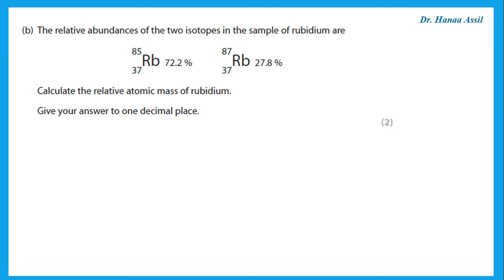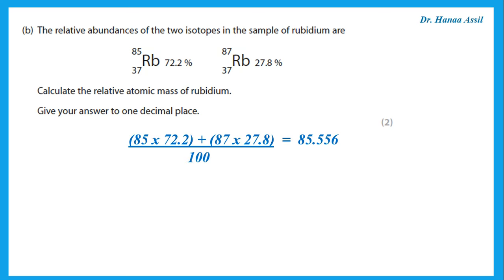The relative abundances of the two isotopes in the sample of rubidium are given. Rubidium-85 has an abundance of 72.2% and rubidium-87 has an abundance of 27.8%. Calculate the relative atomic mass. Remember, the relative atomic mass is the average: mass number times its abundance plus mass number times its abundance, all over 100. Note that the question says give your answer to one decimal place, so the answer is 85.6, not 85.5. Please round up correctly.